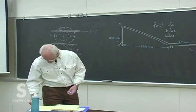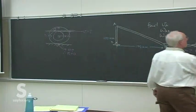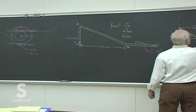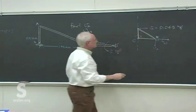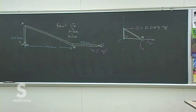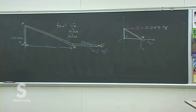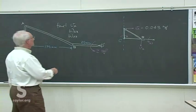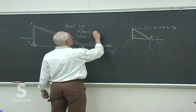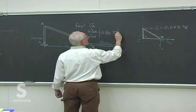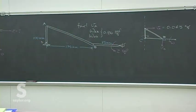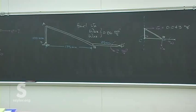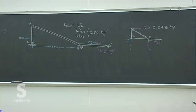Velocity of A is 0.043 meters per second. The angular velocity of AB and AD is the same because they're the same rigid body.